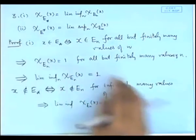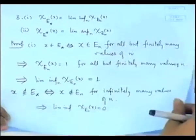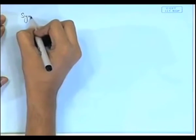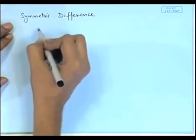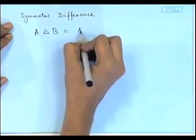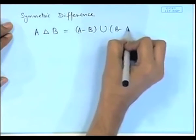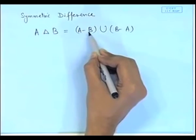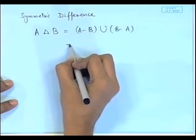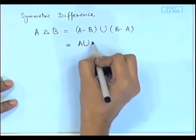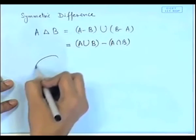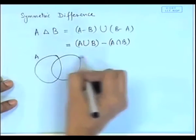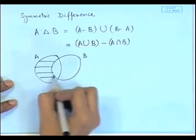A useful relation used in set theory is that of symmetric differences. The symmetric difference is defined by A delta B equal to (A minus B) union (B minus A). So A minus B and B minus A are combined together, which is why it is called a symmetric difference. An equivalent interpretation is A union B minus A intersection B. From Venn diagrams, if we have two sets A and B, the symmetric difference is the shaded portion.